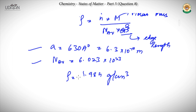For face centered cubic, the number of effective atoms is 4. The 8 corner atoms give their 1/8 contribution each, and the 6 face center atoms give half of their contribution each, so the number of atoms from face centers is 3 and 1 from the corners.